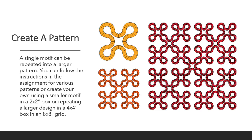Create a pattern. A single motif can be repeated into a larger pattern. You can follow the instructions in the assignment for various patterns, or create your own using a smaller motif in a 2x2 inch box or repeating a larger design in a 4x4 inch box. The pattern will be set in an 8x8 inch grid. Here you can see a smaller motif at the top left and two different examples of how it was repeated to create a pattern.